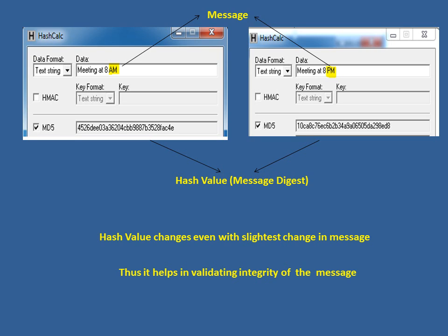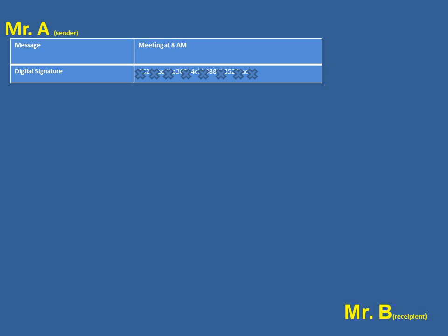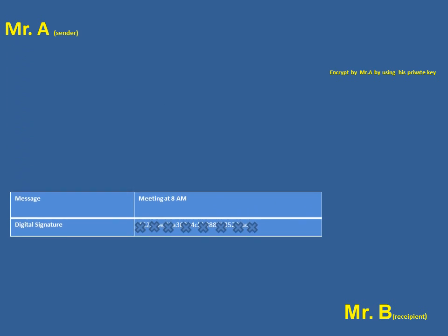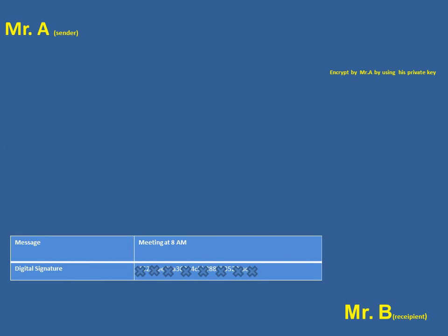This helps in validating the integrity of the message. In a practical scenario, Mr. A (the sender) wants to send a message 'meeting at 8 a.m.' to Mr. B (the recipient). He sends this message along with the digital signature. This digital signature is encrypted using the sender's private key — that is the core of digital signature.